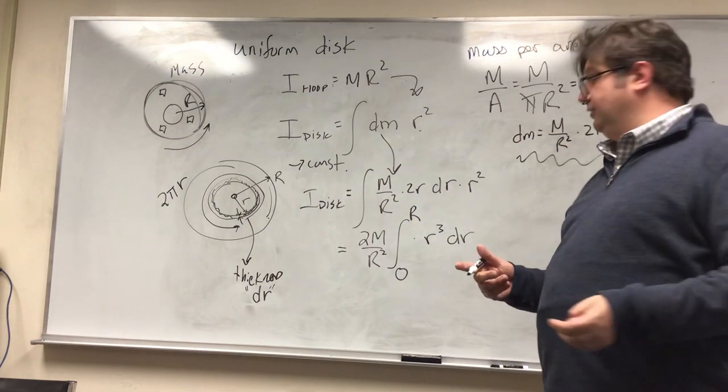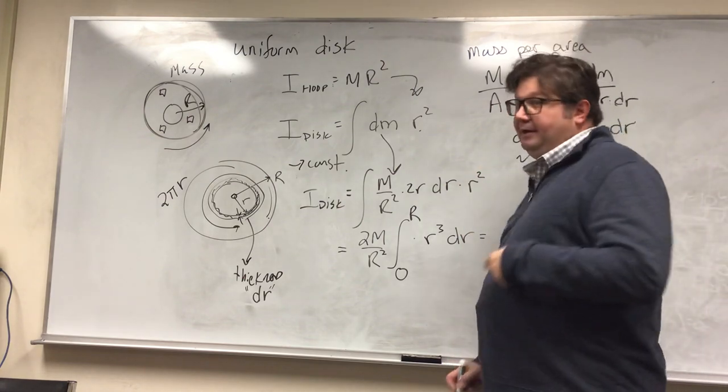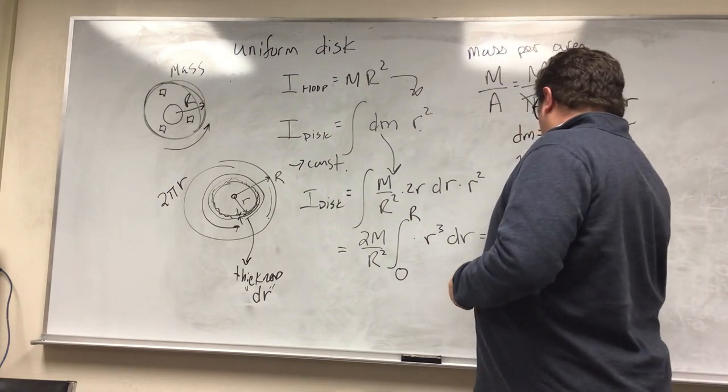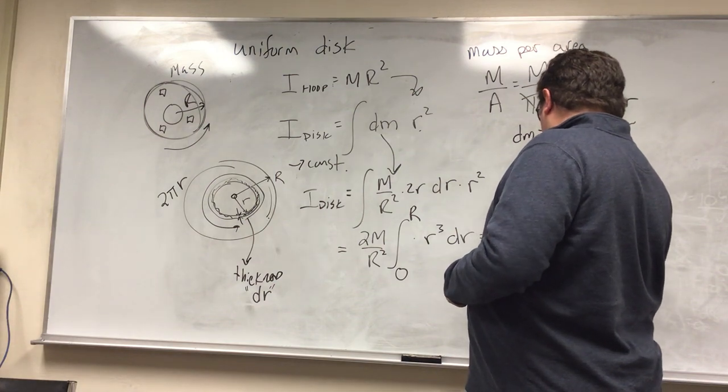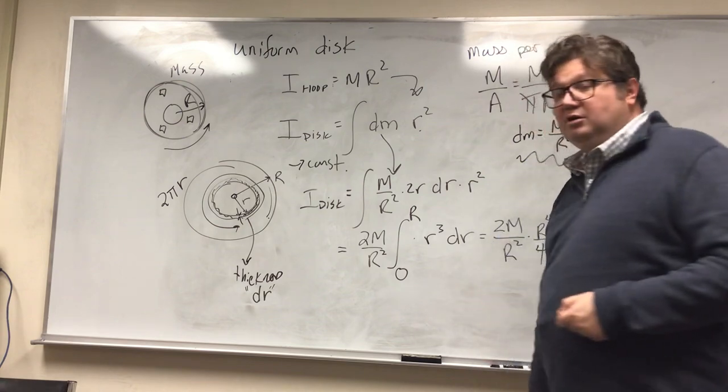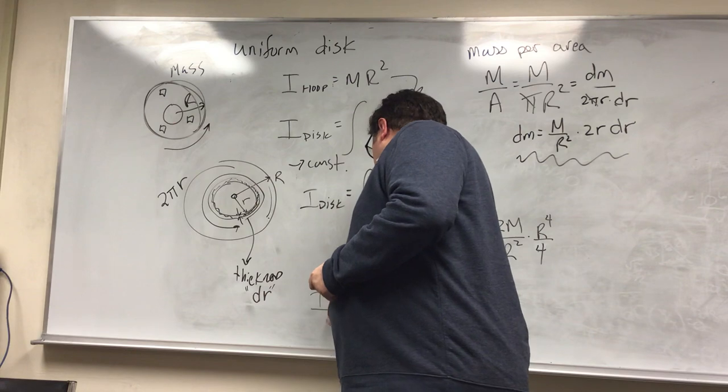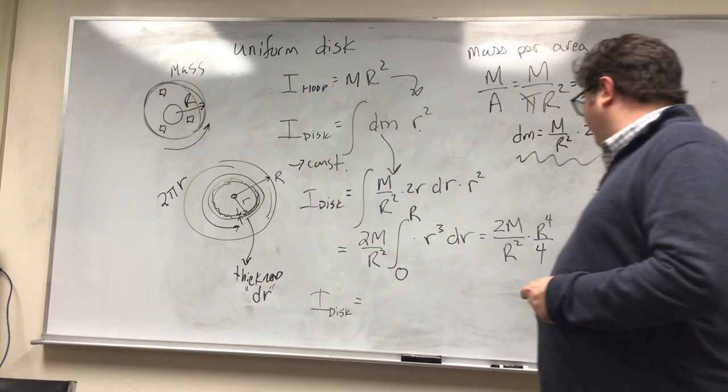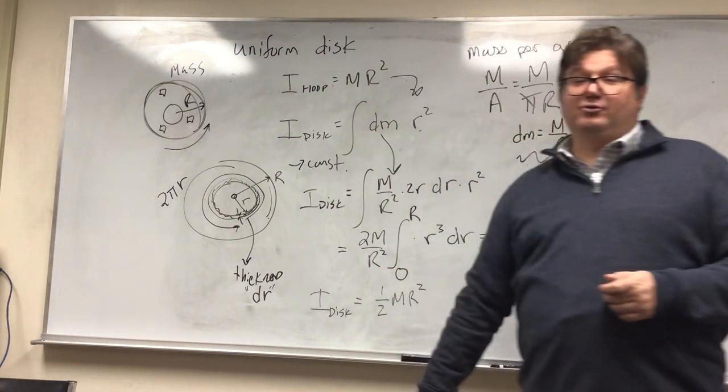Now we integrate. r cubed dr is just r to the fourth over 4. So we have 2m over r squared times r to the fourth over 4. We do some arithmetic. The moment of inertia of the disk becomes 1 half m r squared.